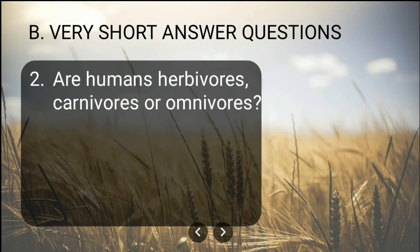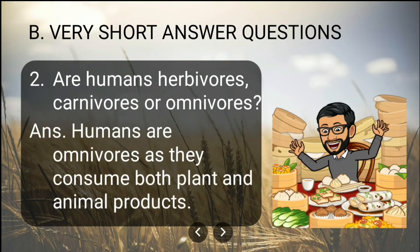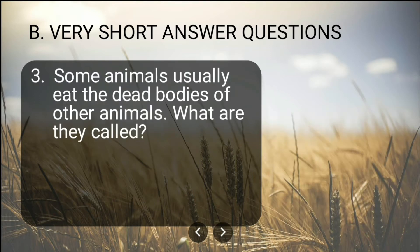Moving on to the next question: Are humans herbivores, carnivores, or omnivores? Humans are omnivores as they consume both plant and animal products. Third question: Some animals usually eat the dead bodies of other animals — what are they called?